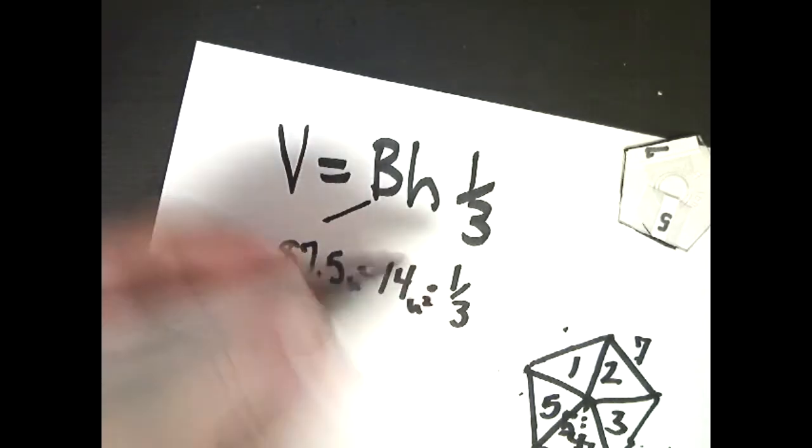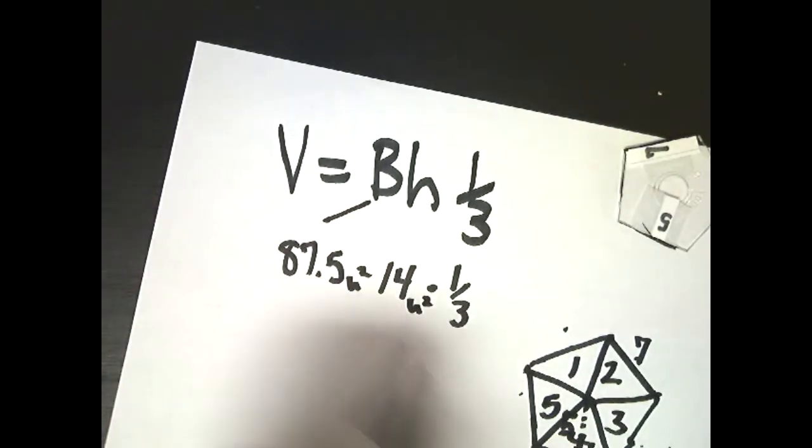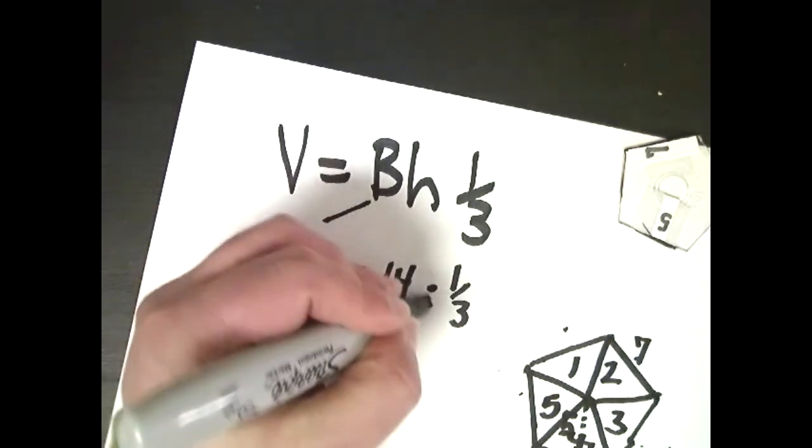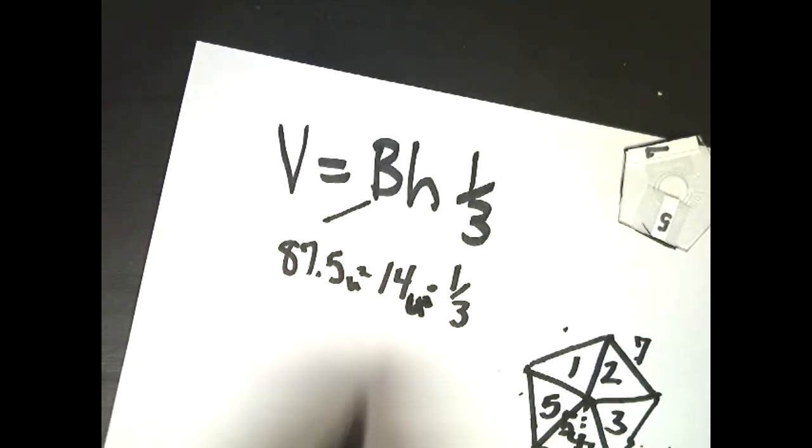And this is unit squared. This is going to give me in units, because the height of it is just a single dimension. I don't know why I put a 2 there. I meant to put just 1, sorry. So I'm going to work this out. So I do 87.5 times 14 times one-third.